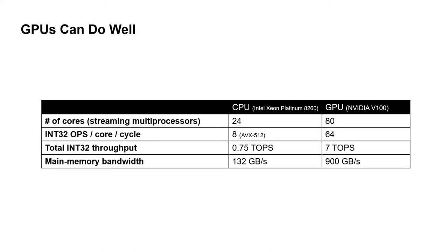So why do we choose GPUs over CPUs? They both have dozens of cores, but GPUs have much higher integer operation throughput per core per cycle compared to that of CPUs. GPUs also outperform CPUs around 10 times in both total integer throughput and also in main memory bandwidth. So for this reason, many HE research papers appearing now are exploiting GPUs more and more.